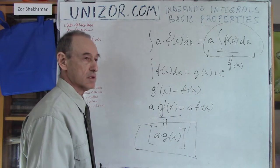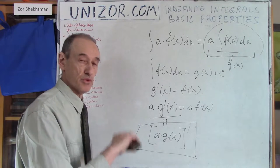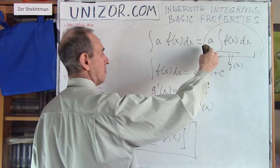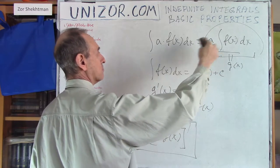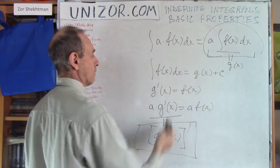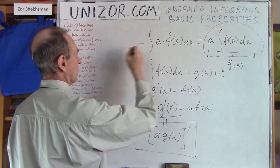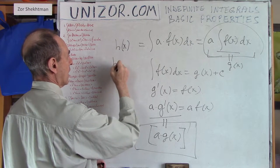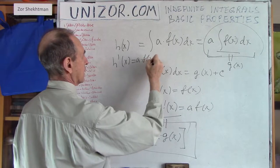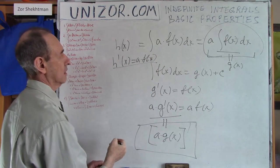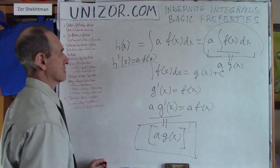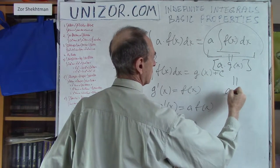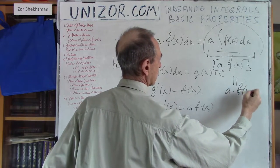Basically, all these properties of integrals are proven by the corresponding properties of the derivative. Since the derivative of a product of a function by a constant equals the constant multiplied by the derivative, that's why we have this result. Derivative of the right side is also equal to a·f(x), so that's why they are equal.